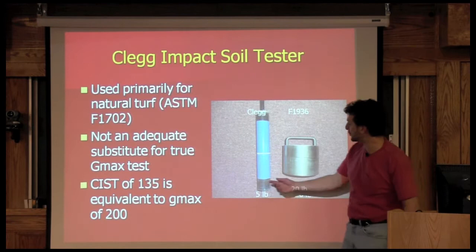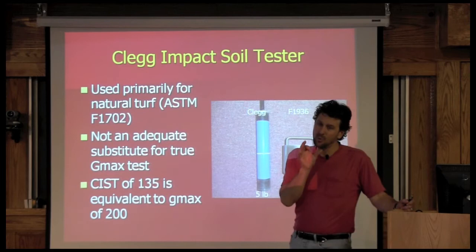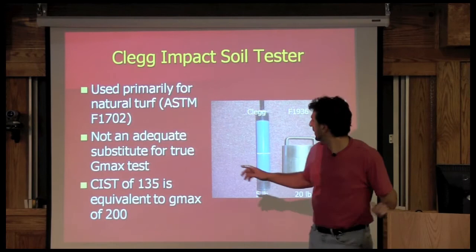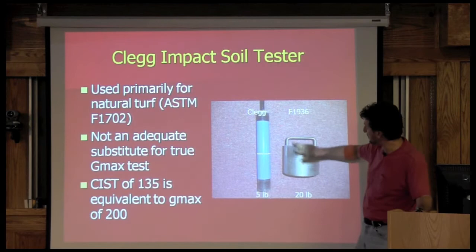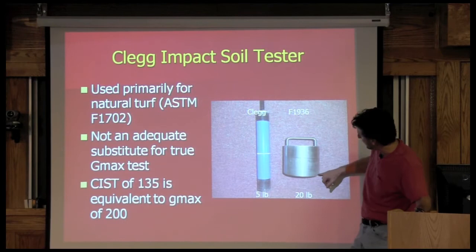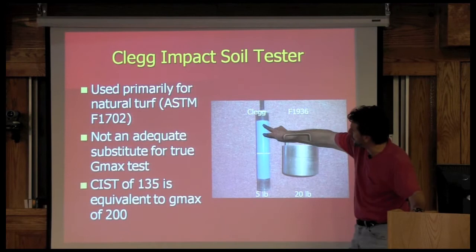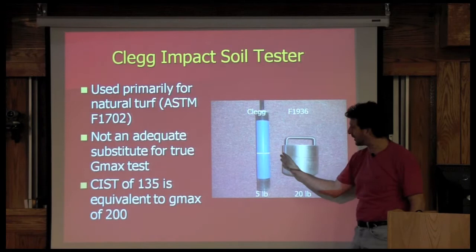There are two ways of doing this. The Clegg hammer was the original way designed by turf scientists to look at field hardness. What has not been well established in this country is whether you can correlate the Clegg hammer drop to the risk of head injury. A different device used for GMAX testing following the F-1936 standard uses a 20-pound weight shaped concavely, which may better simulate what a head would do. The Clegg is for natural turf but is not well correlated; you cannot substitute it for the GMAX device.